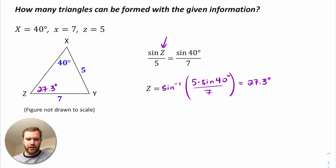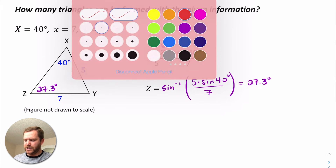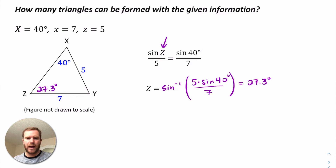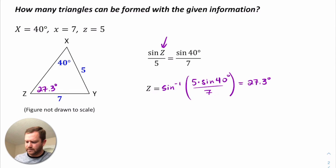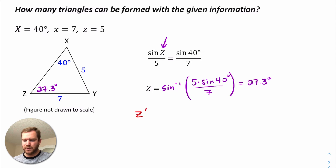If we were going to find angle Y, we can just add 40 and 27, subtract from 180, and that would give us the measure for Y. But what if there was another possible triangle? How would we know? In order for there to be another triangle, we'd have to find some measure of Z prime.